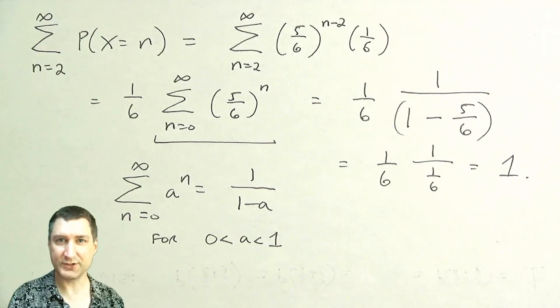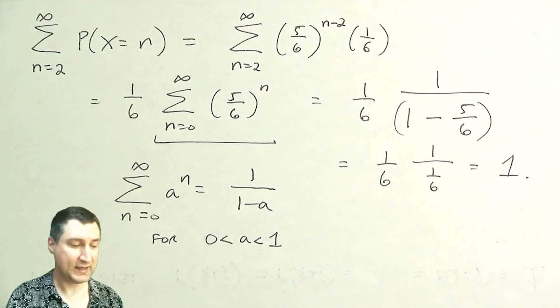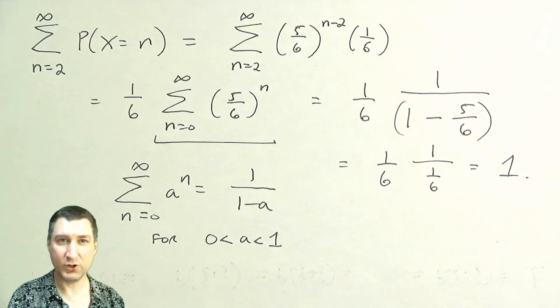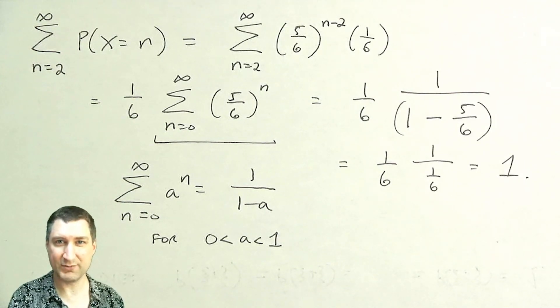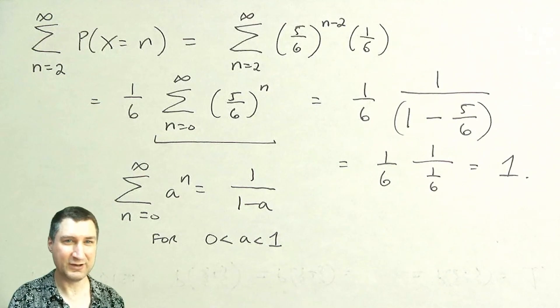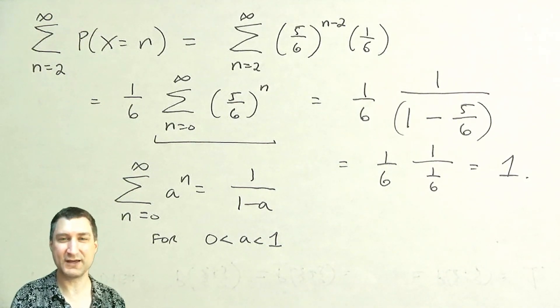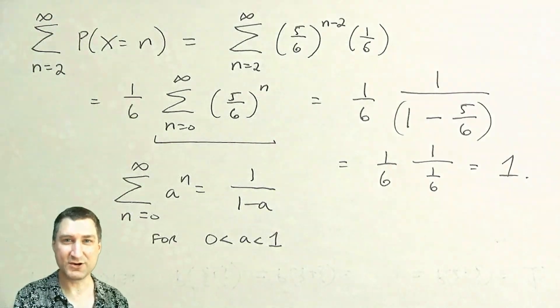As we're going to talk about later on, this is an example of what's called the geometric probability distribution. Next time we'll talk about even more complicated ways of talking about discrete probability spaces, and these are going to be the kind of combinatorics problems that you oftentimes see in probability homeworks—things like card tricks and probability of getting a royal flush on a poker draw, stuff like that. So tune in next time for more examples.